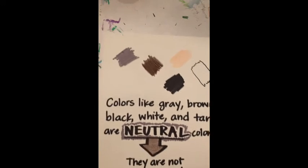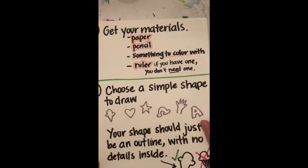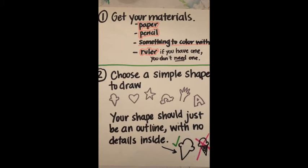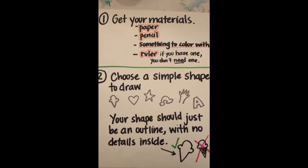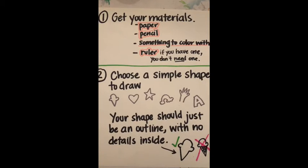It is time for us to start our warm-cool project. To start, you can get your materials. You will need a pencil, paper, something to color with like crayons or markers or colored pencils—whatever you have. A ruler is great if you have one, but you don't need it.